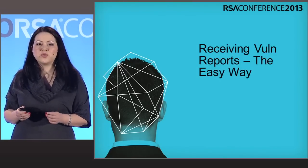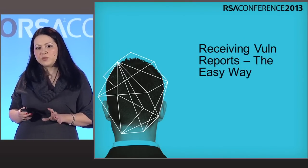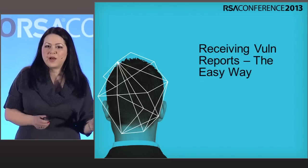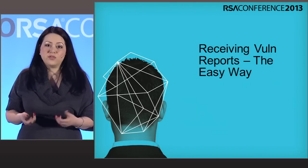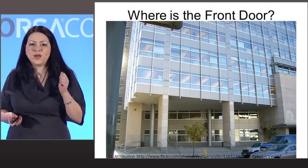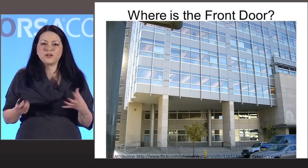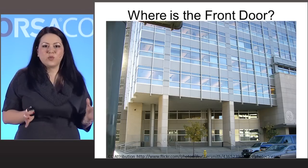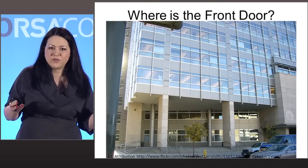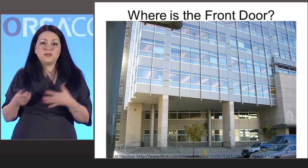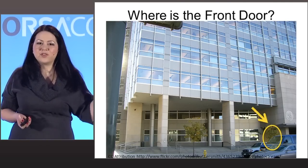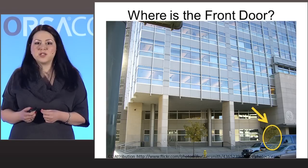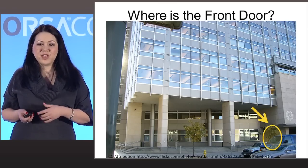First, we'll go through 29147, which covers receiving the vulnerability report from hackers, all the things you need to do to prepare to receive that report, and the kinds of things you need to release in an advisory. Make it easy for a hacker to find your front door — it's not always obvious. The standard gives suggestions such as 'secure@yourcompanyname.com' or providing a web form. If it's not obvious for somebody to report a vulnerability to you, they may come through other channels, such as going to the media.